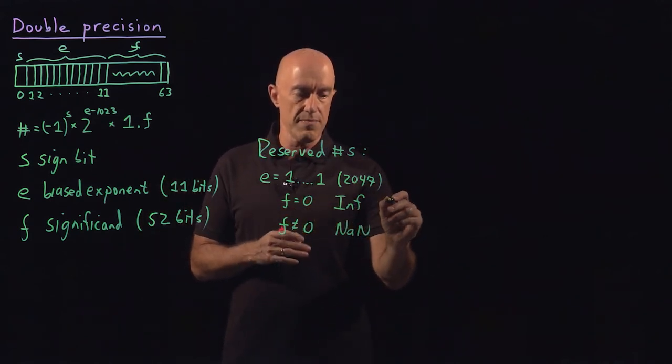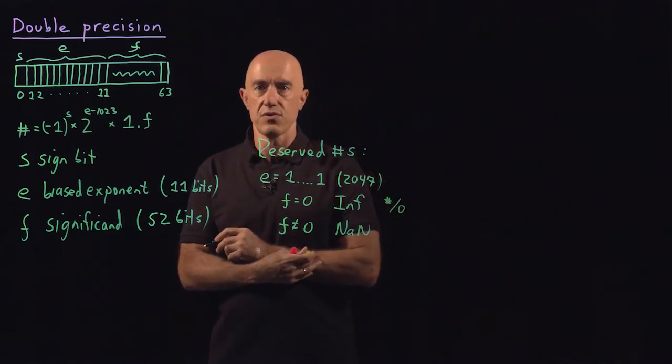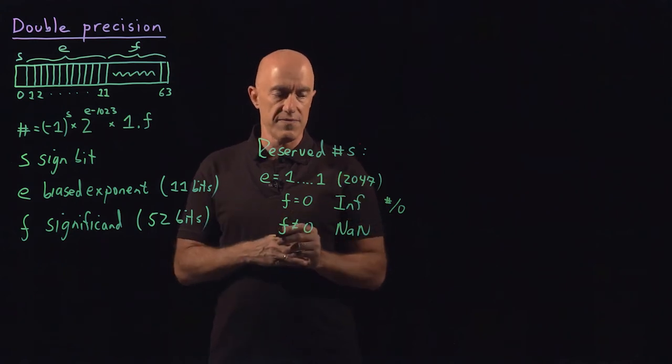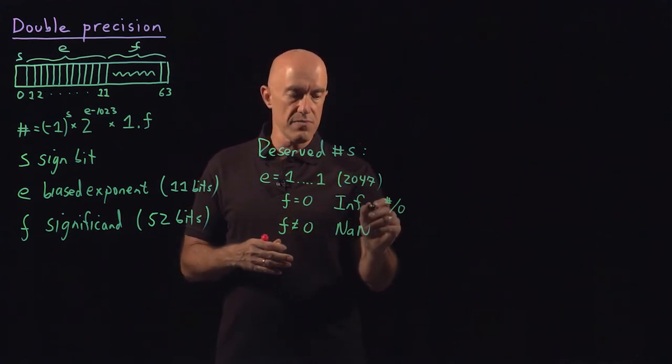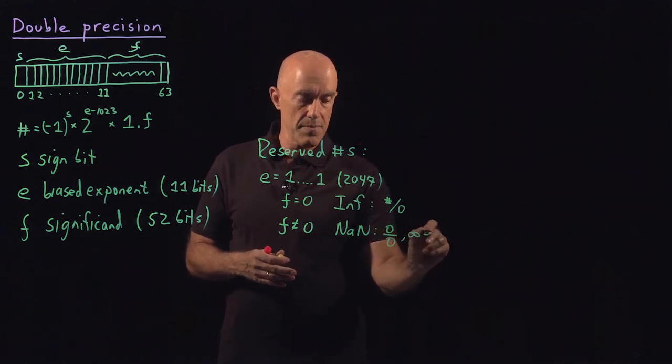Infinity would be some number divided by zero would always give you an infinity. You can have a plus infinity or a minus infinity.